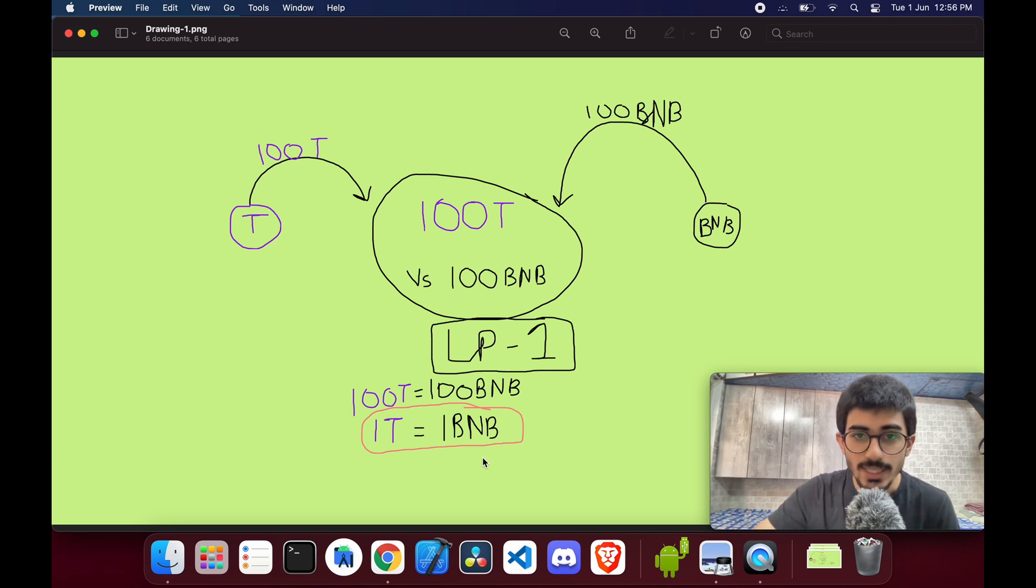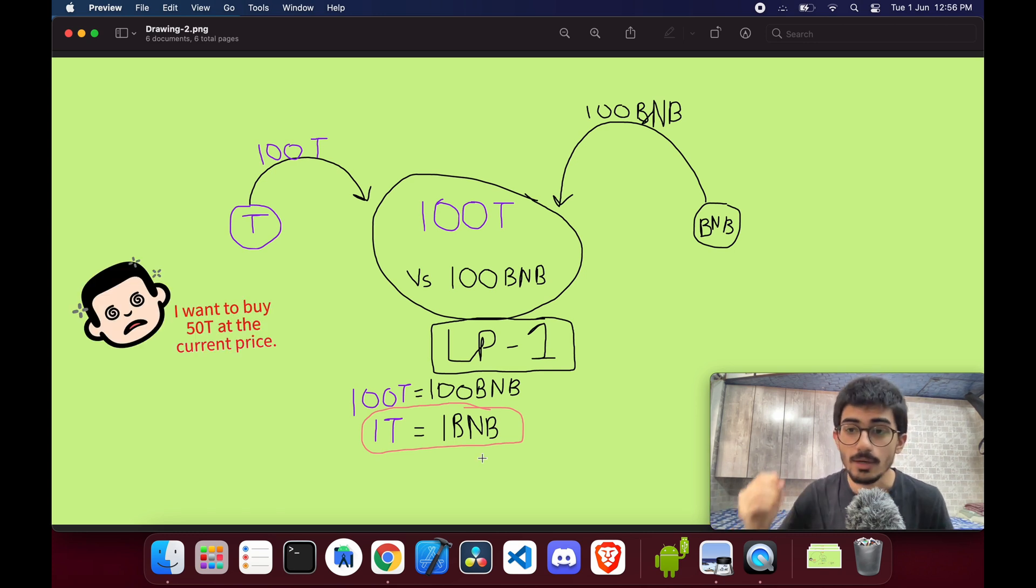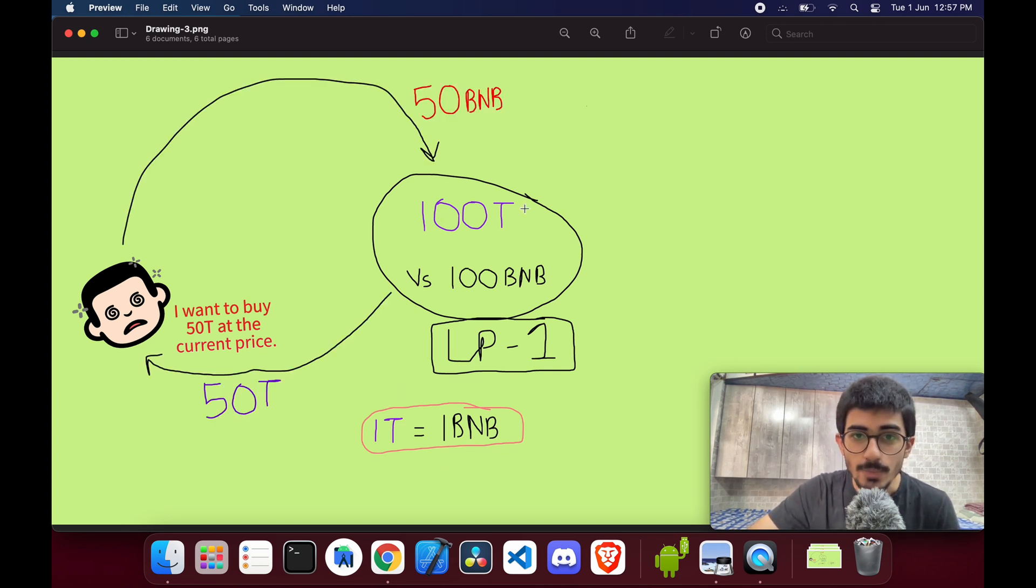Now say for example a buyer comes in and wants to buy 50 tokens at the current price. He wants to buy it at the current price, that means he has to pay 50 BNB in return to get 50 tokens, right? Because that's the current price - one token equals one BNB. So he puts in 50 BNBs to get 50 tokens.